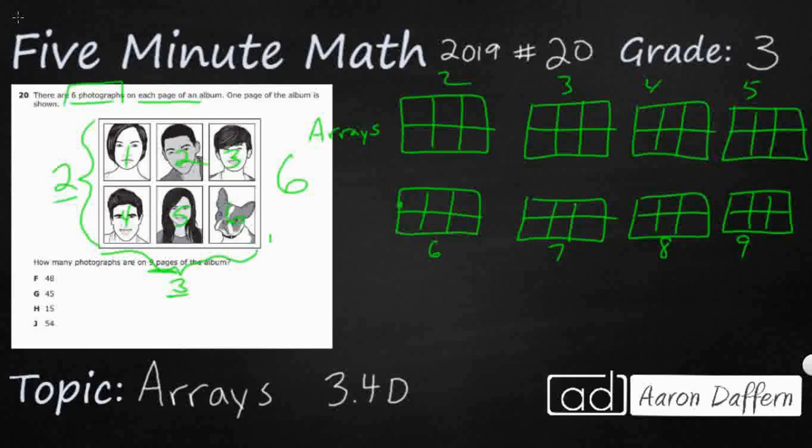Now there's several things I can do here. I need to count how many photographs are on nine pages. So first we have to make sure we count this first page. I don't need to draw nine additional pages. I only need to draw eight additional pages because I've already got one pictured. I could, if I wanted to, count every single square.